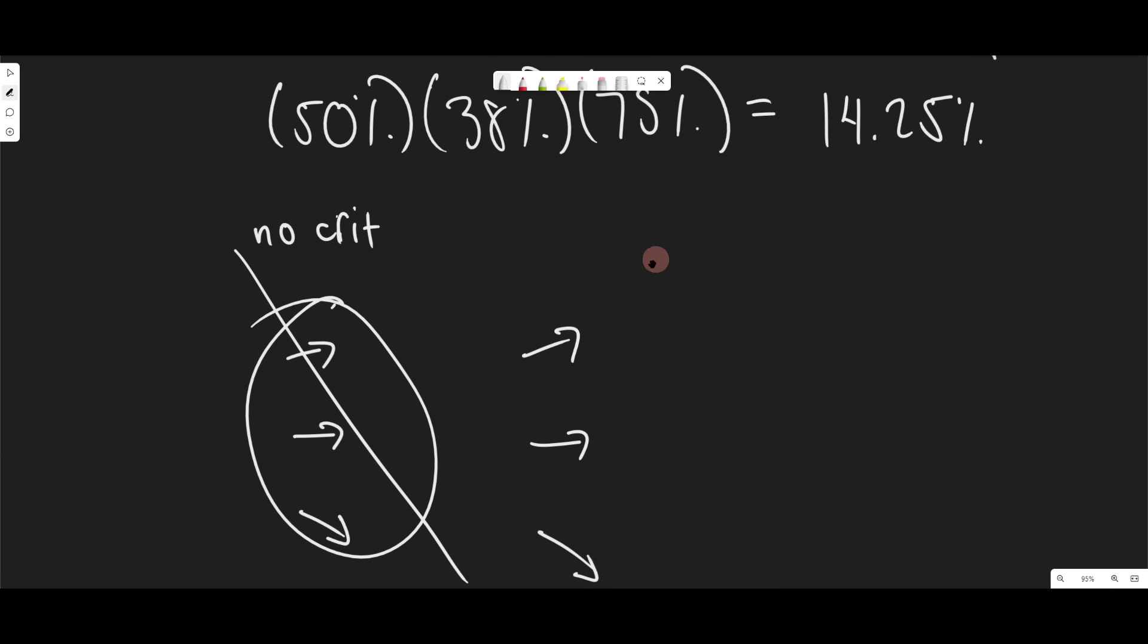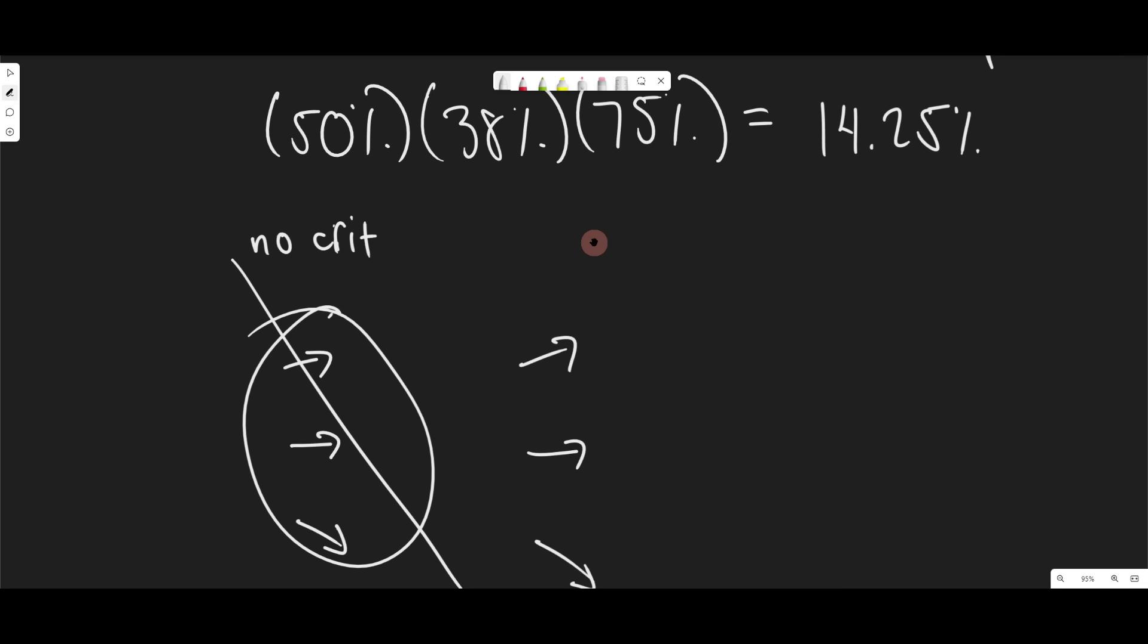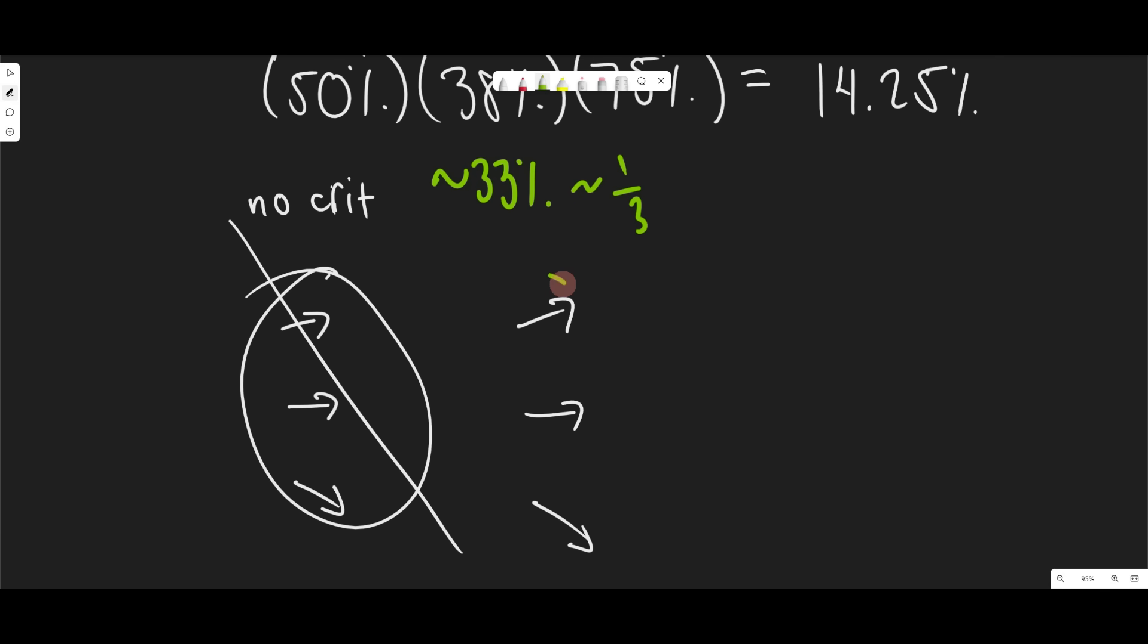And now 38% of those are going to Lucky Hit. Now, just to make numbers a little bit easier, let's just say that this is approximately 33%, which is one third, right? One out of three. So now this one here, one out of three is going to be a Lucky Hit. So this one's gone, this one's gone.